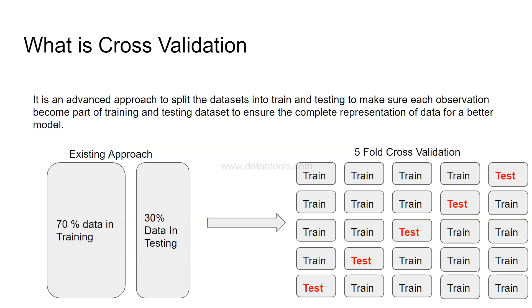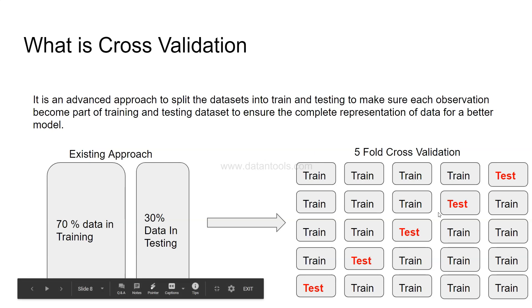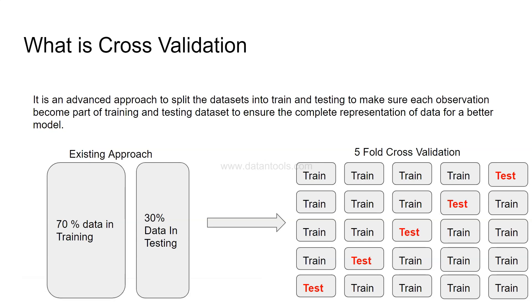Cross validation is run with the help of the GridSearch method. When you apply this procedure on a model, GridSearchCV has a cv parameter where you can specify how many folds you want — whether 5 or 10. Let's see how to implement this in Python.